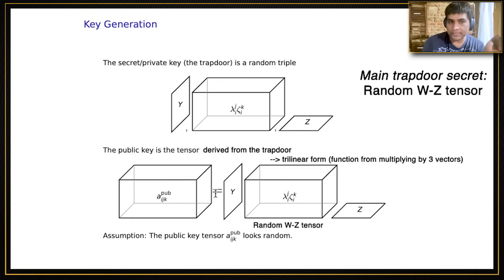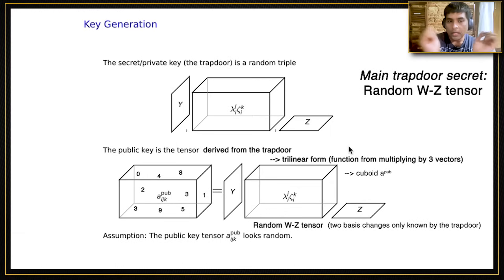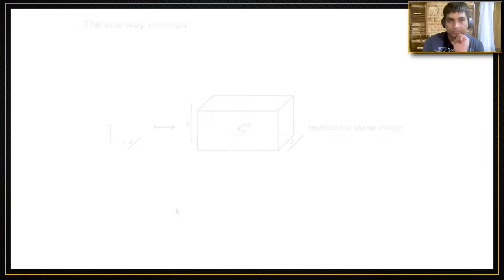These two basis changes are also part of the secret. But once I twist that, I get another trilinear form, which I can write down as a cuboid of numbers, called A_pub. The crucial thing is that only the secret trapdoor knows this factorization in terms of Weyman-Zelevinsky tensor and two basis changes. If I look at this public key tensor derived as I mentioned, this public key actually looks quite random. This is a well-known cryptographic assumption that's been studied before, and a lot of cryptographic systems have been built on it.